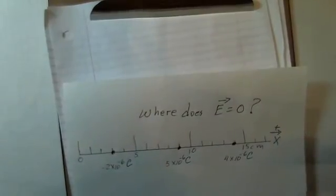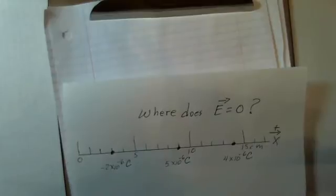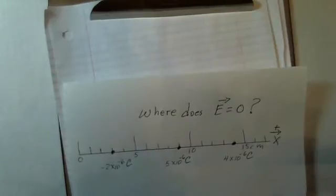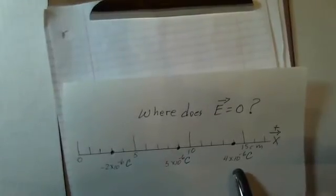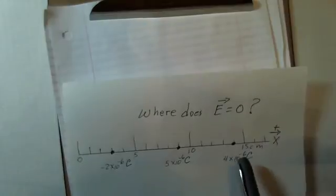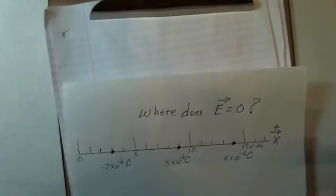There's a charge of minus 2 times 10 to the minus 6 Coulombs at the 3 centimeter mark. There's a charge of plus 5 times 10 to the minus 6 Coulombs at 9 centimeters, and a charge of plus 4 times 10 to the minus 6 Coulombs at 14 centimeters. We want to know where the electric field could be equal to zero.